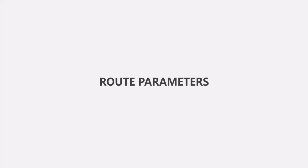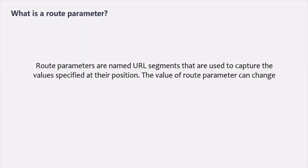In this lecture, let's understand what is a route parameter and how to read the value of a route parameter from our ASP.NET Core application. Route parameters are the named URL segments that are used to capture the value specified at their position. The value of the route parameter can change. Let's understand route parameters with an example.